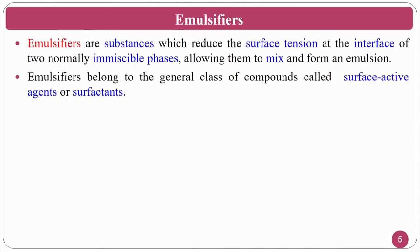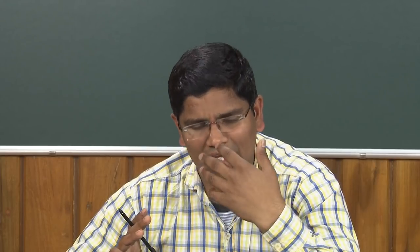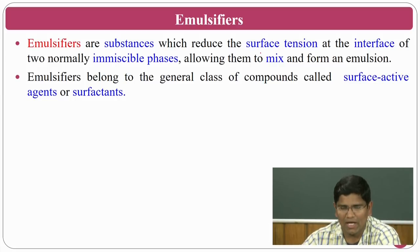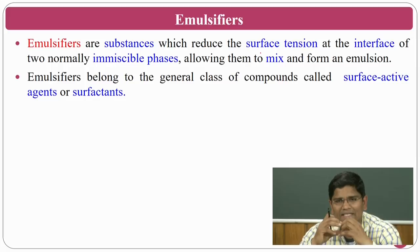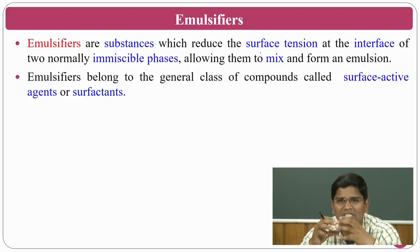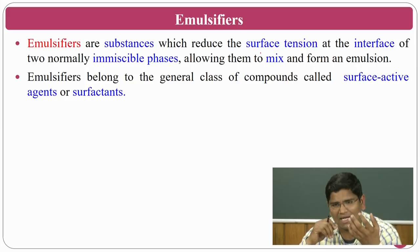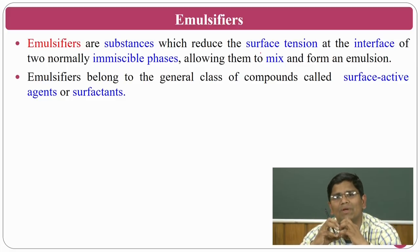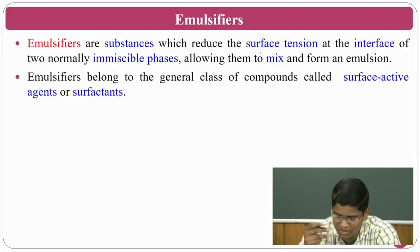Emulsifiers are substances which reduce the surface tension at the interface of two normally immiscible phases, allowing them to mix. When you have oil and water, they will not mix because they have different surface tensions. When you add an emulsifier, it reduces the surface tension between the two — bringing the higher surface tension material's surface tension down near to the lower one — so both become miscible. That is the intention of using an emulsifier.